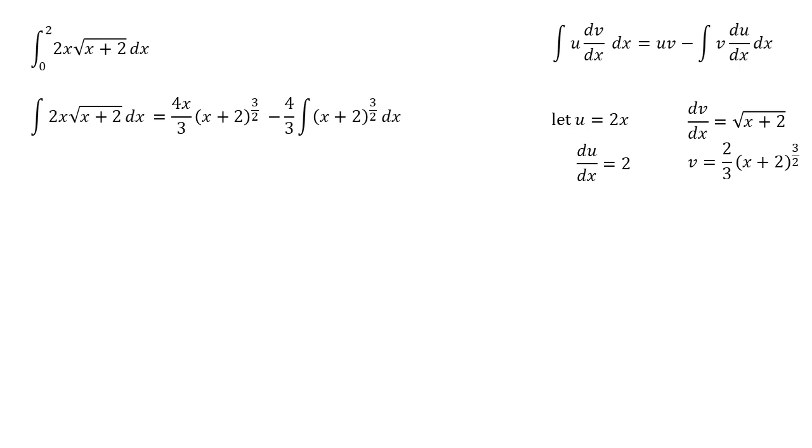We've now got something where that integral, we can do that. It's just x plus 2 to a power. Nice and easy. So the first part stays the same. Our integral, we raise the power 3 over 2. That becomes 5 over 2. We divide by it. So we've got 2 fifths there. And then we've got our c on the end.